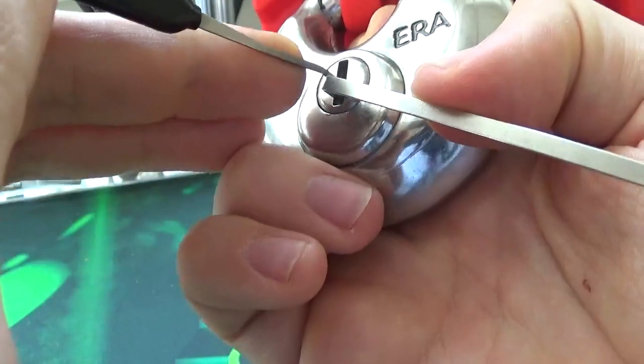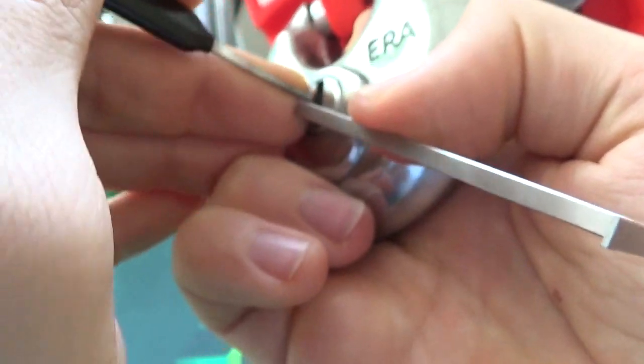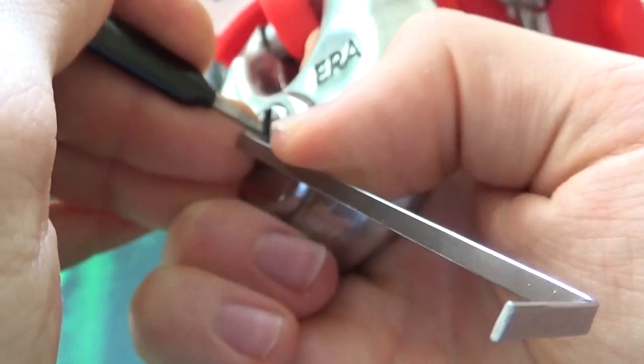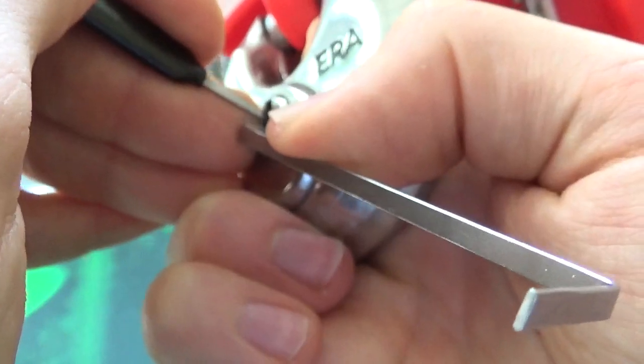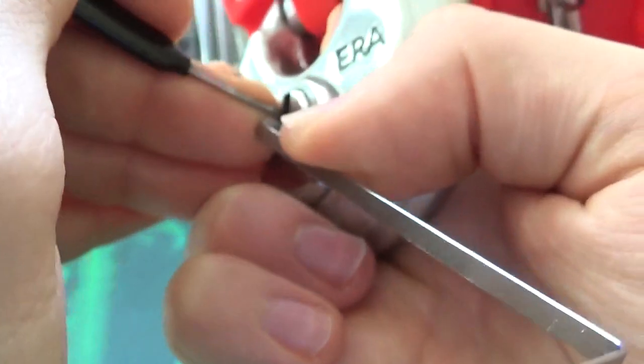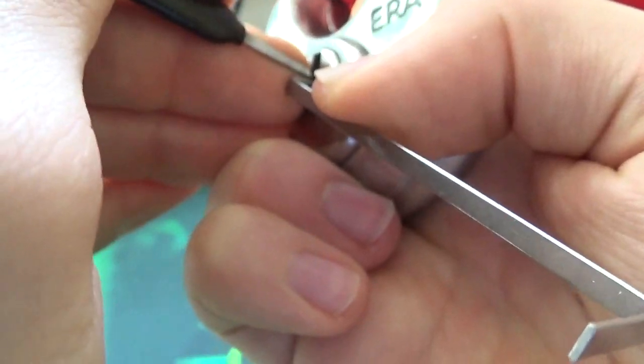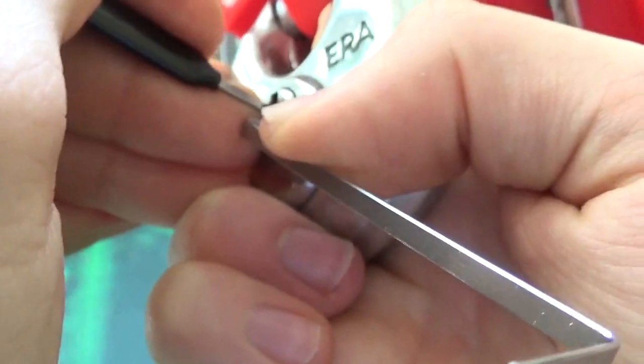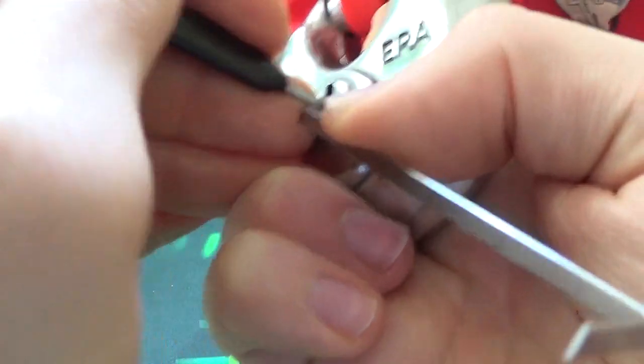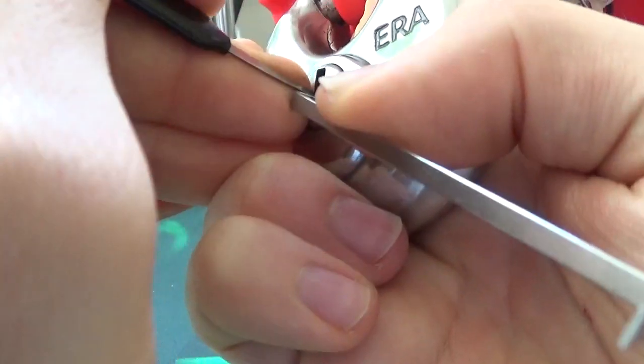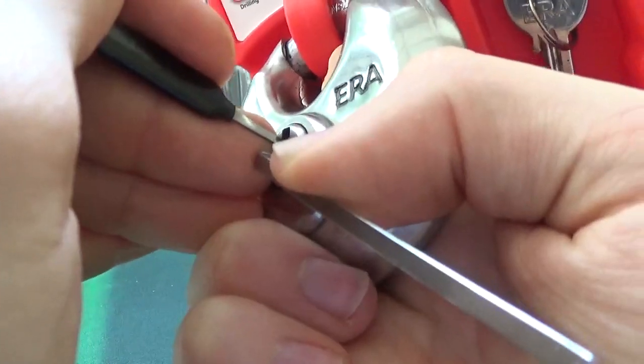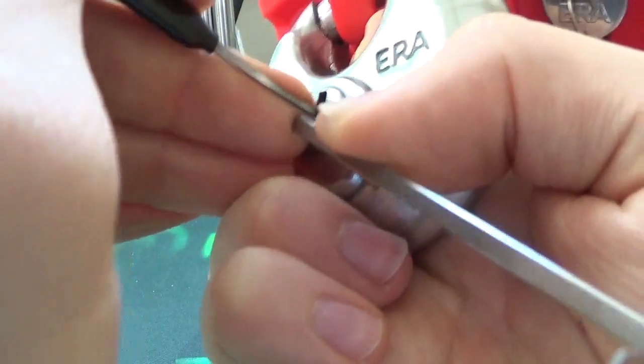It's definitely putting up a fight for a four pinner, so that's good. I'm now trying to pick for serrated pins. I was expecting spools, that's what I'm used to coming across on stock locks. It feels like this one has something else going on.